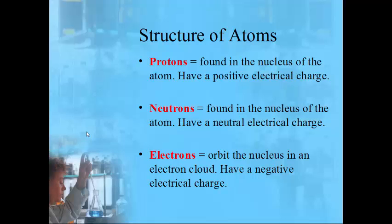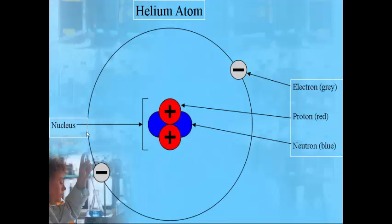Here is a standard view of the helium atom. The particles with a positive sign are the protons, those with no indication are the neutrons, and that whole central area is the nucleus. The negative symbols represent the electrons that orbit the nucleus in what's called an electron cloud.